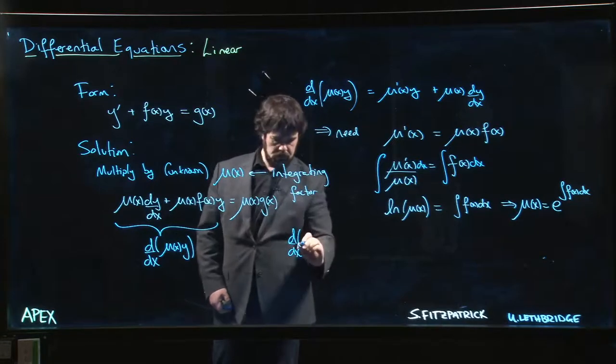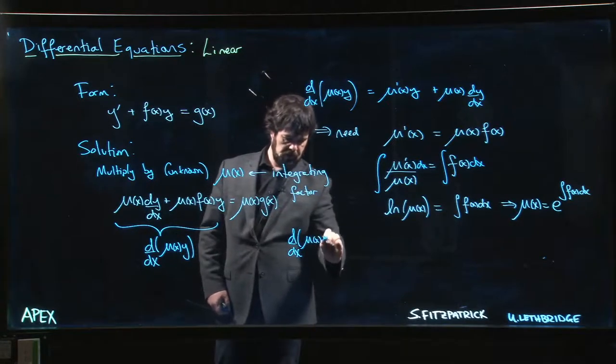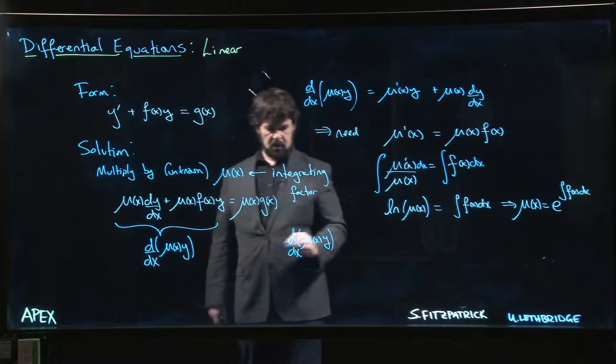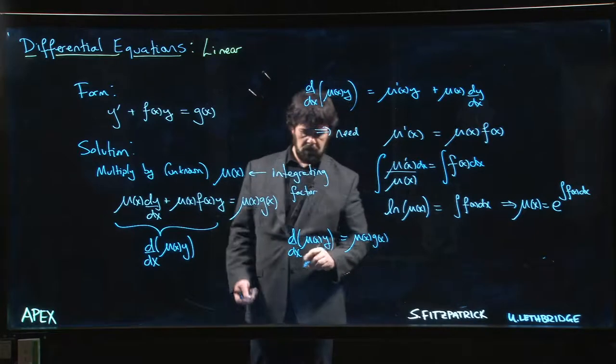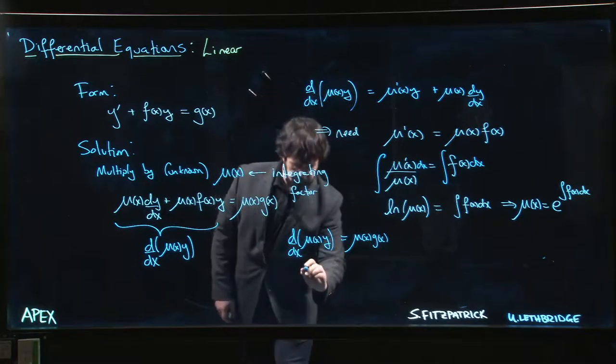So this is now just mu of x times y, and that's going to be equal to mu of x times g of x. And so that means that mu of x times y should be, well, the integral of mu of x times g of x.